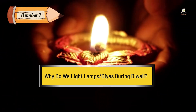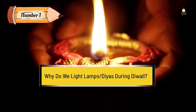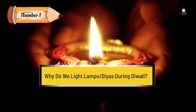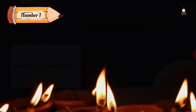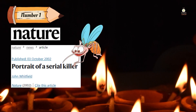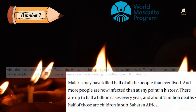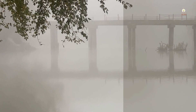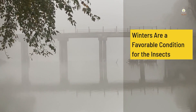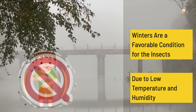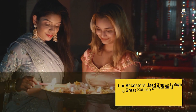Number one: why do we light lamps or diyas during Diwali? Apart from the literal meaning of spreading light and symbolizing the victory of light over darkness, the lighting of these lamps has a scientific reason. It is done to ward off the most dangerous animal in the entire world — the mosquito — responsible for the death of half of all people who ever lived, and an estimated one million deaths per year.